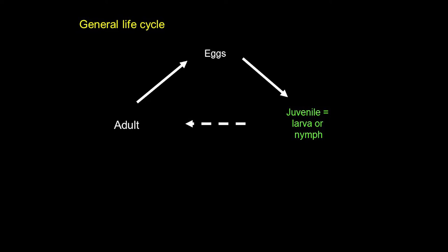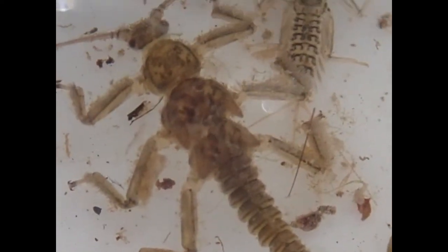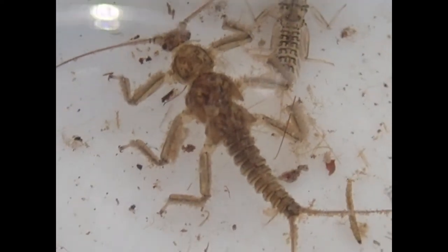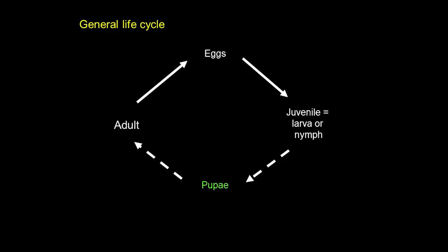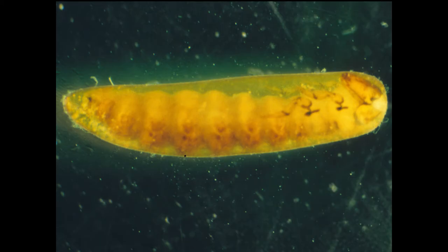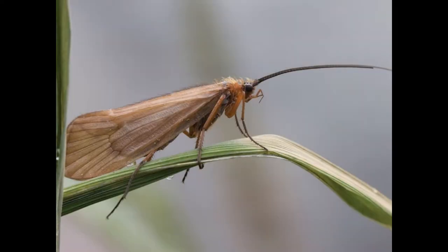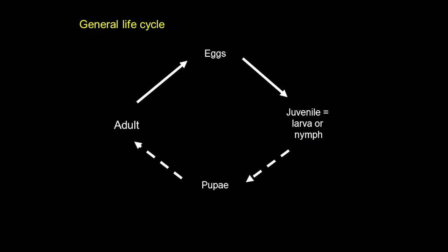Larvae or nymphs can live up to a year or more as juveniles in the water, and some benthic invertebrates have a pupal phase — so they metamorphose, they change from the larvae to the adult. This is similar to what you see with moths and other insects that a lot of people are familiar with.